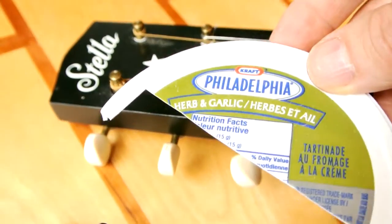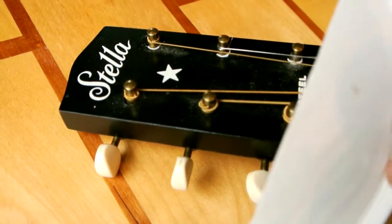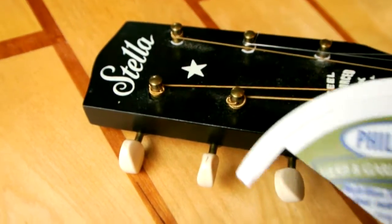I just used the plastic lid from a cream cheese container. It seems to be about the right thickness for jamming in there.